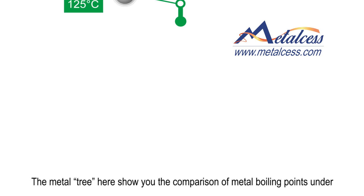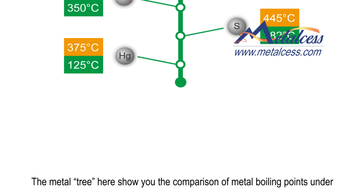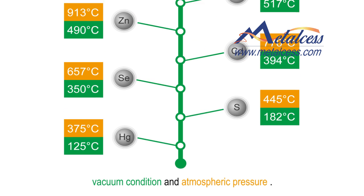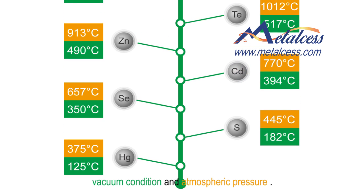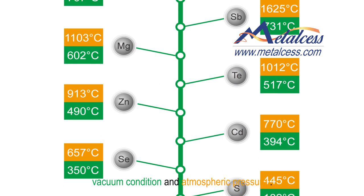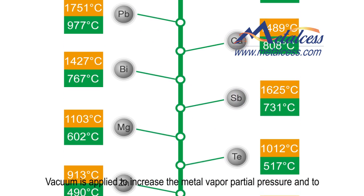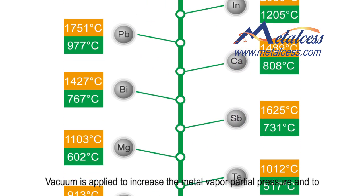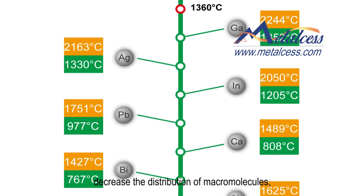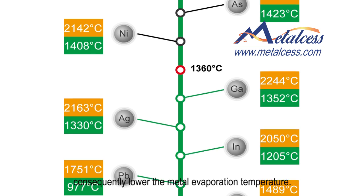The metal tree here shows you the comparison of metal boiling points under vacuum condition indicated by green, and atmospheric pressure indicated by orange. Vacuum is applied to increase matter vapor partial pressure and to decrease the distribution of macromolecules, consequently lowering the matter evaporation temperature.